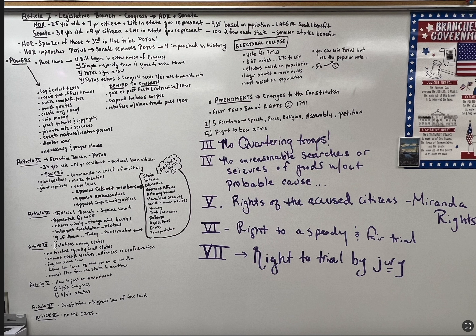Article 4 talks about the relations among the states. Every person is to be treated equally in all states — one state cannot be treating a citizen differently than another. Also, states cannot create treaties, alliances, or confederations with other states, nor can they create armies with other states. That means the Civil War was unconstitutional. There's also a fugitive slave law, which means that if a slave runs away and goes from one state to another, that slave must be returned to the state from which that slave came — basically saying that non-slaveholding states have to help enforce slaveholding.